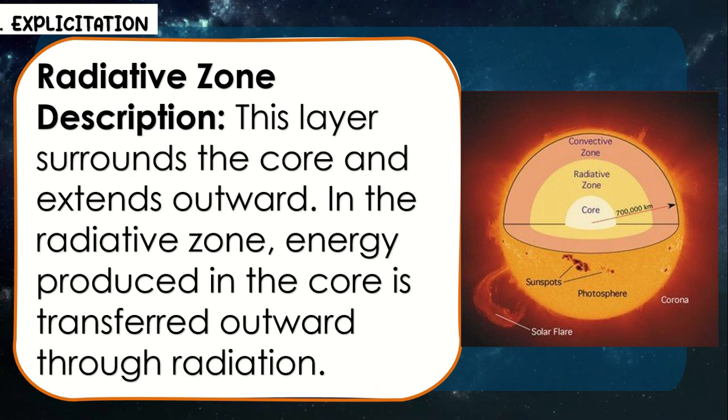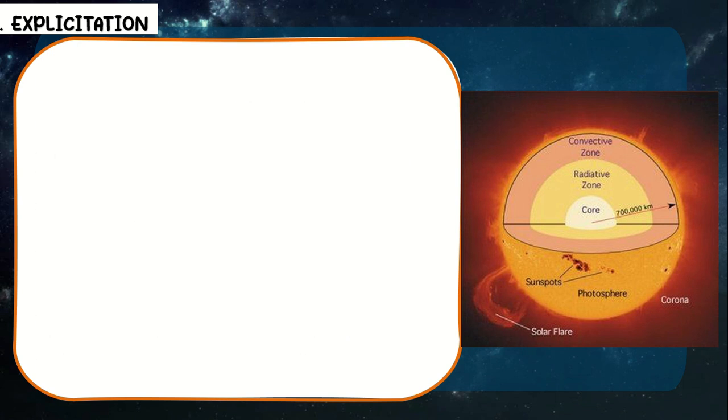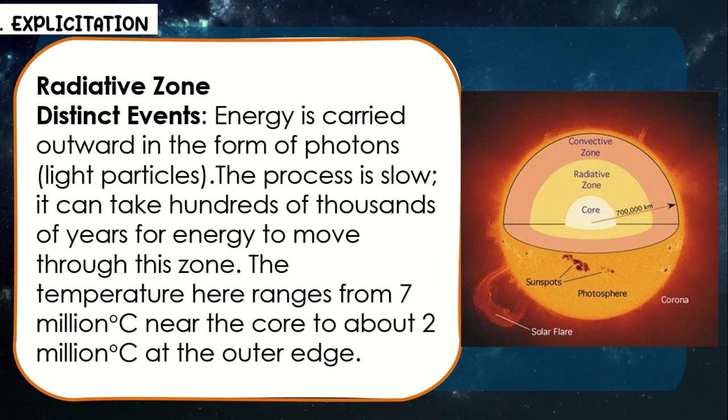The radiative zone surrounds the core and extends outward. In the radiative zone, energy produced in the core is transferred outward through radiation. Energy is carried outward in the form of photons — light particles. The process is slow; it can take hundreds of thousands of years for energy to move through this zone. The temperature here ranges from 7 million degrees Celsius near the core to about 2 million degrees Celsius at the outer edge.